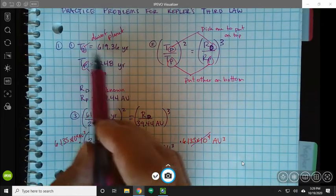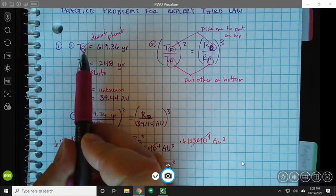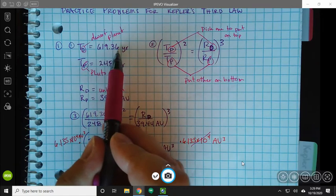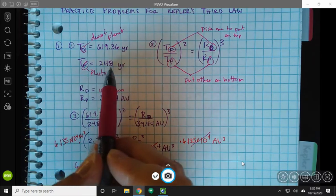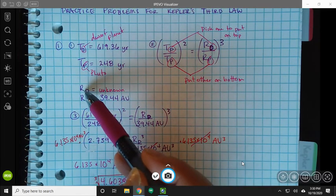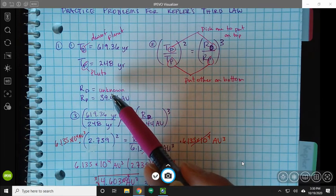So the first thing I'm going to do here, step one, I'm going to write out the givens. So the dwarf planet has a period of 619.36 years and Pluto has a period of 248 years. I'm going to write that in. We do not know what the average orbital distance is for the dwarf planet, so we don't know what its semi-major axis is.